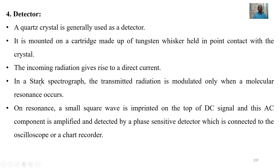The fourth part is the detector. A quartz crystal is generally used as a detector. It is mounted on a cartridge made up of a tungsten whisker held in point contact with the crystal. The incoming radiation gives rise to a direct current. In a Stark spectrograph, the transmitted radiation is modulated only when a molecular resonance occurs. On resonance, a small square wave is imprinted on top of this signal, and this AC component is amplified and detected by a phase-sensitive detector connected to the oscilloscope or a chart recorder.